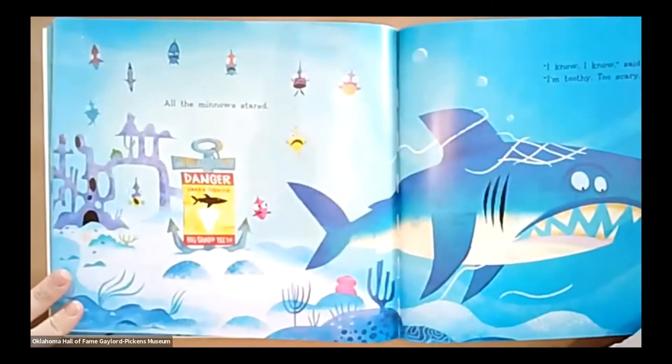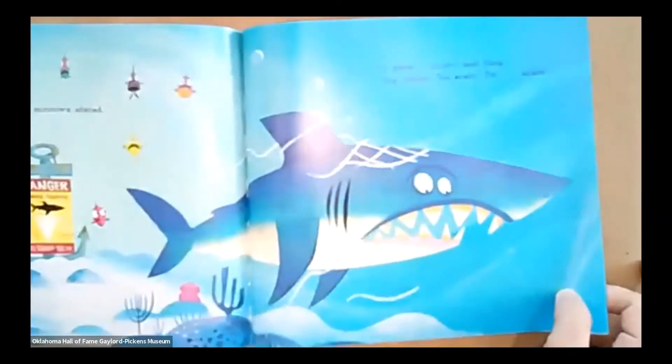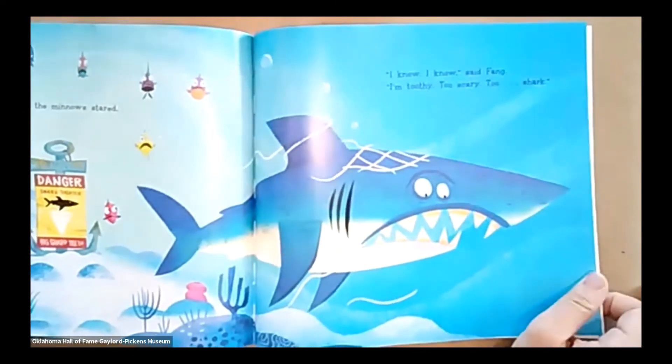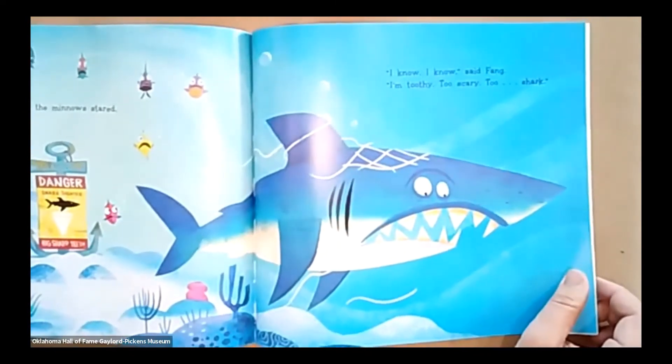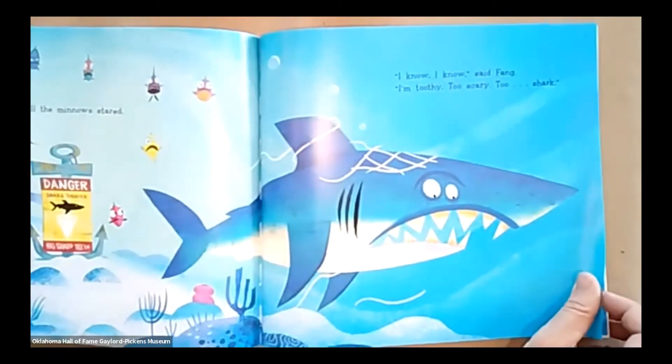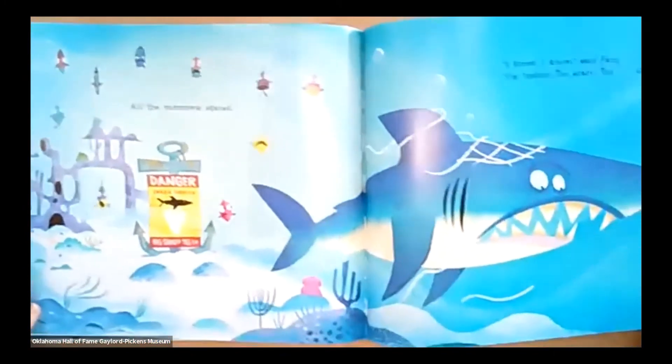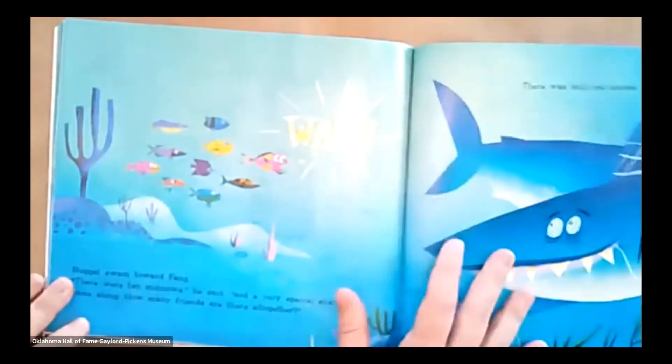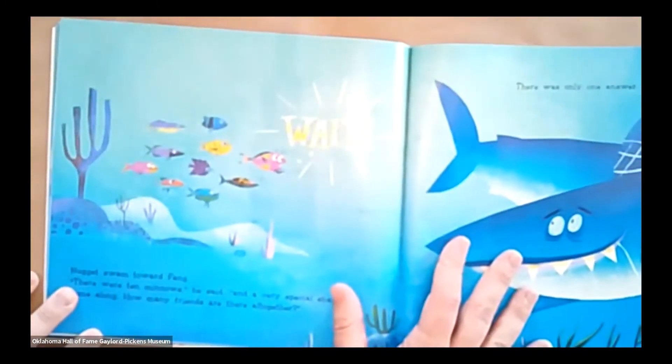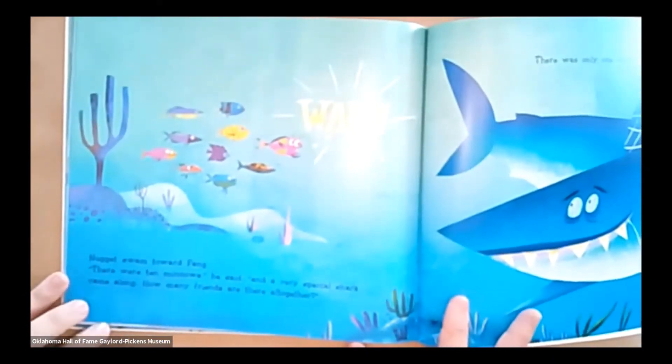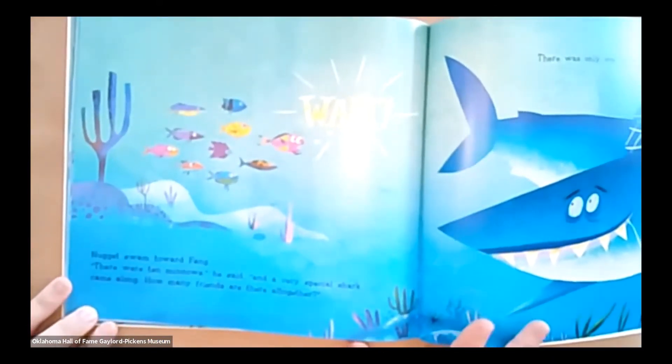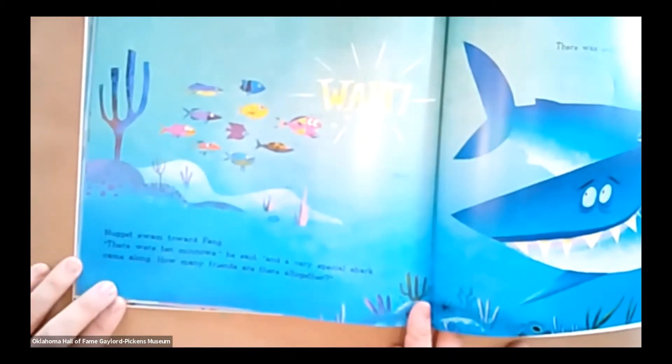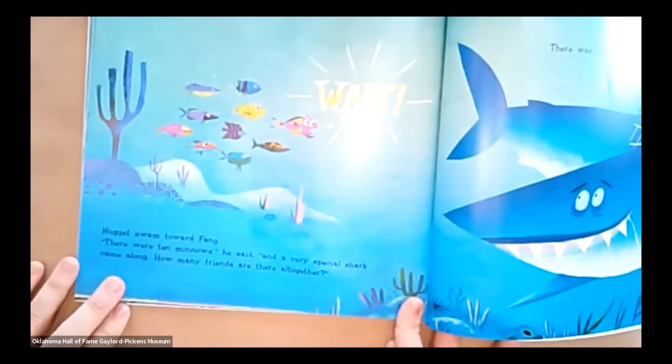All the minnows stared. I know. I know, said Fang. I'm toothy. I'm too scary. I'm too shark. Now they're all staring at him right after he saved them. Wait, said Nugget. Nugget swam toward Fang. There were ten minnows, he said. And a very special shark came along. How many friends are there all together?